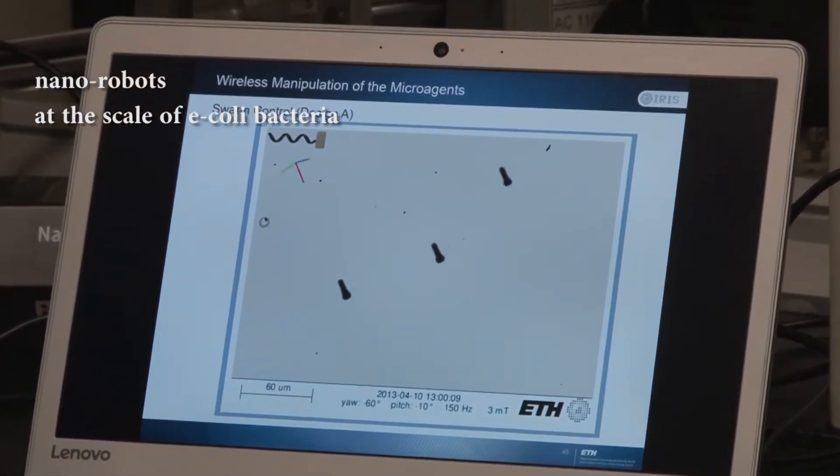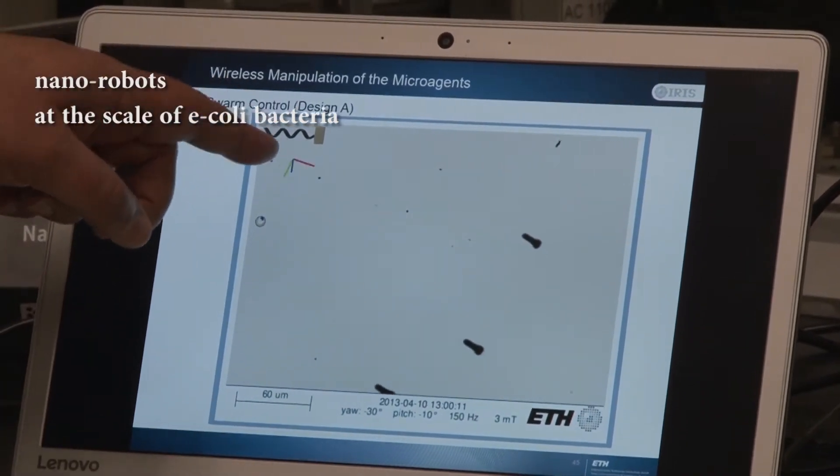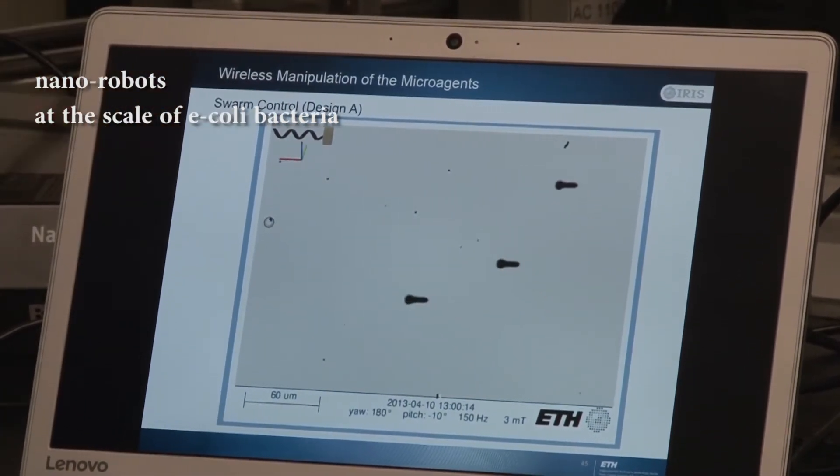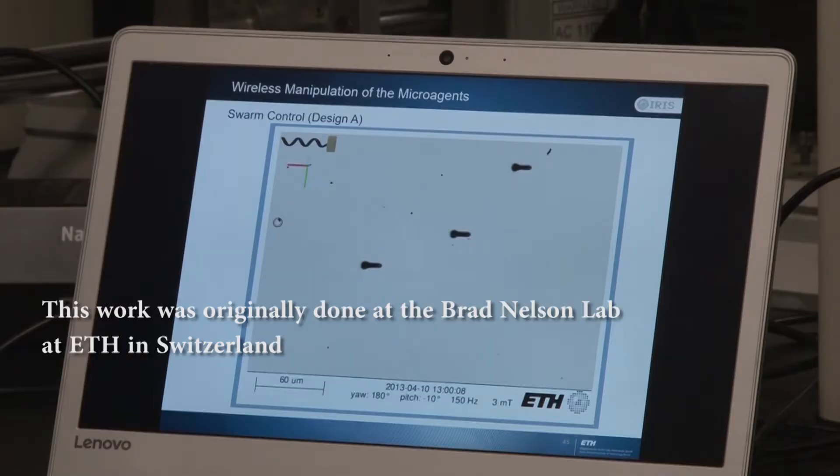What we've been looking at in the world today is to develop these micro and nano robots. These are things that are at the scale of E. coli bacteria.